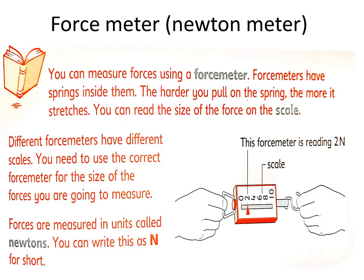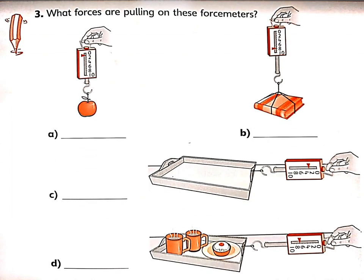Here I have a lot of objects. I'm going to find the weight of each using the force meter. The first one is the apple, and the scale goes from 0 to 10. I put the apple on — can you see the reading? From 0 to 2, it will be 1 Newton. So the apple pulls down with 1 Newton.